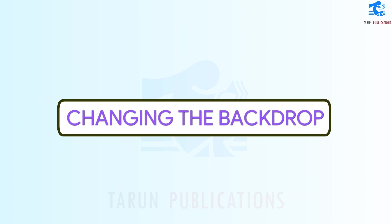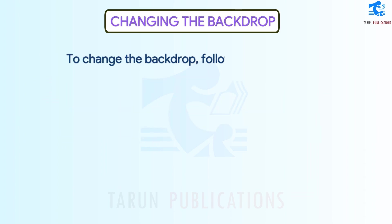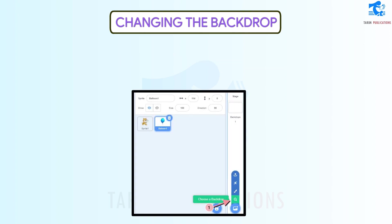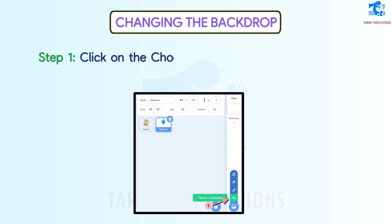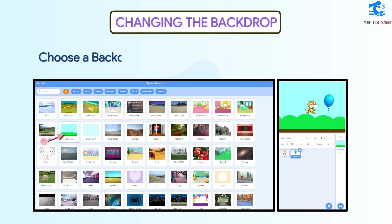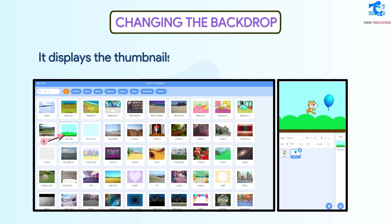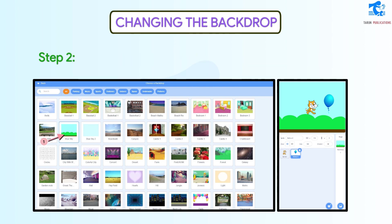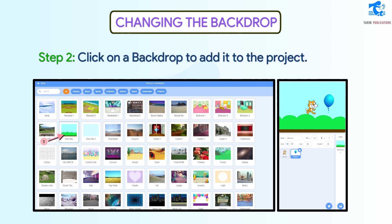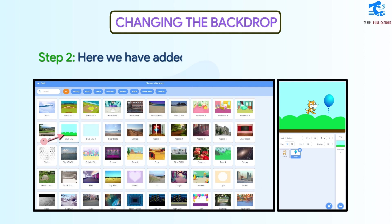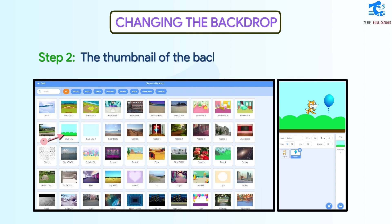Changing the backdrop. To change the backdrop, follow the given steps. Step 1: Click on the Choose a Backdrop tool in the Sprite's info pane. The Choose a Backdrop window will appear displaying the thumbnails of the available backdrops. Step 2: Click on a backdrop to add it to the project. Here we have added a blue sky backdrop. The thumbnail of the backdrop appears in the Sprite's info pane.